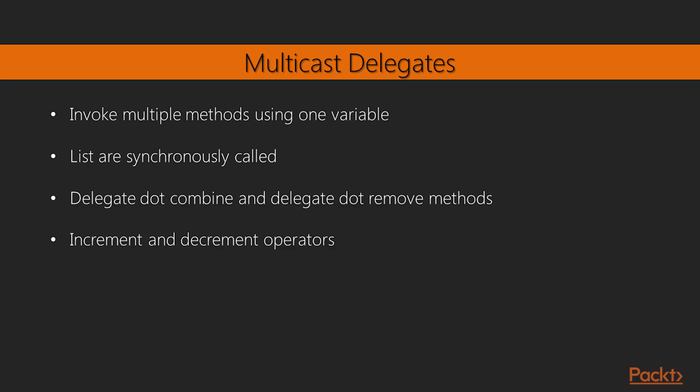Now let's see multicast delegates. We have just discussed a simple delegate where we assign a particular method to a delegate variable — we can call it a unicast delegate. However, delegates can actually invoke multiple methods using one variable; for this purpose, we can call it a multicast delegate. In the case of a multicast delegate, it is like a list of delegates stored inside an internal list. When we invoke a multicast delegate, the delegates in the list are synchronously called in the correct order. The two approaches we will discuss are the delegate.combine and delegate.remove methods, and the increment and decrement operators.